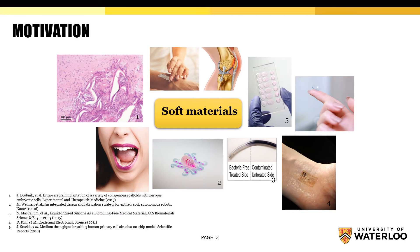Soft materials have numerous applications in nature and research. In our bodies, we can find soft materials in soft tissue, tongue and palate, skin and cartilage. In research areas, soft materials are often used to fabricate microfluidic chips, contact lenses, skin sensors, etc.